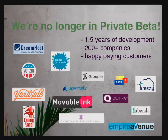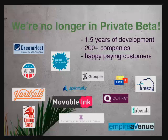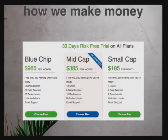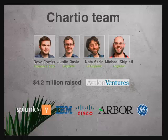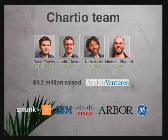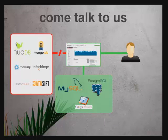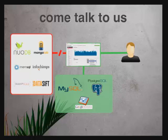We're announcing here today that we're no longer in private beta. We've been developing for one and a half years, working with over 200 companies, and we have many happy paying customers. It's a simple monthly subscription service with 30 days free — go to our website and try it out today. We have six people on a small but very experienced team. We are a Y Combinator company and we've raised $4.2 million from Avalon Ventures and other angels. Chartio hooks into MySQL, Postgres, Google Analytics, and soon Oracle. We'd also love to talk to data service providers about being the interface for your data.